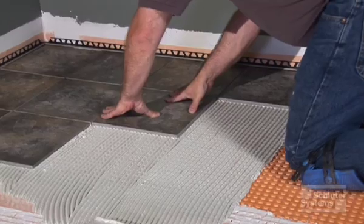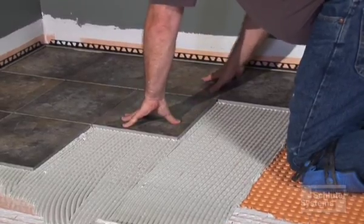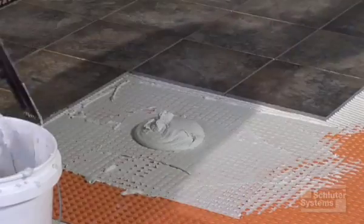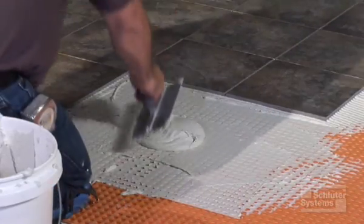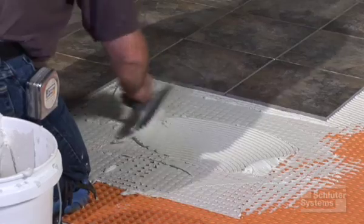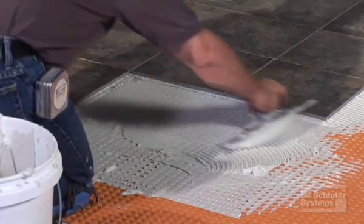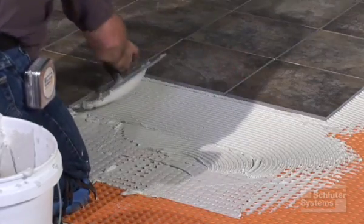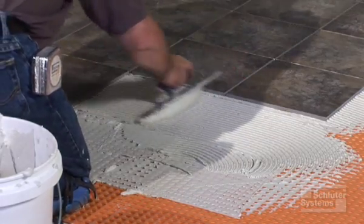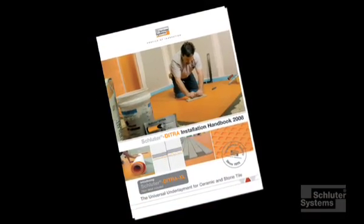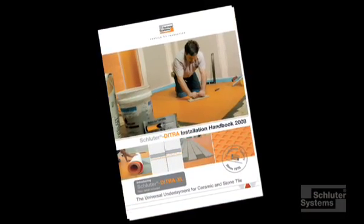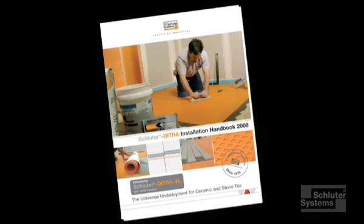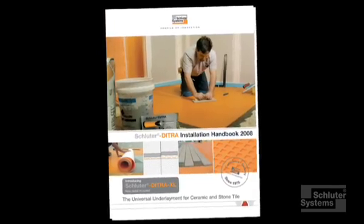Now we need the tiles to be bonded, and using the right product will make the installation last. Talk to us about thinset mortars. Well, basically thinset mortar is a sand and cement based product, and you want to use the right kind in the right place. You're going to reference the Ditra handbook — this will let you know what thinset mortars we recommend for your appropriate substrate.